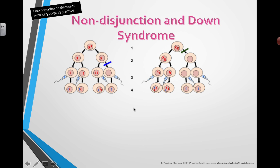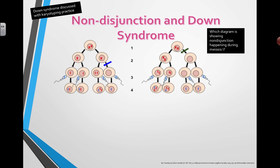If you look at these two diagrams, can you tell where non-disjunction is happening? Which diagram or which locations in each diagram are actually showing where non-disjunction is happening? In both of these situations you have meiosis happening to form sperm cells or egg cells, and we're looking at meiosis 1 and meiosis 2 with the second division as well.